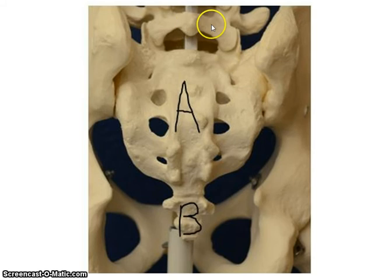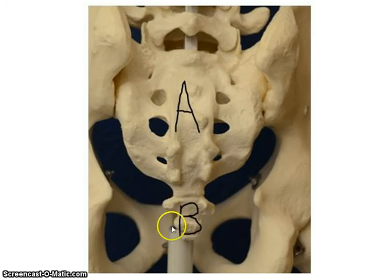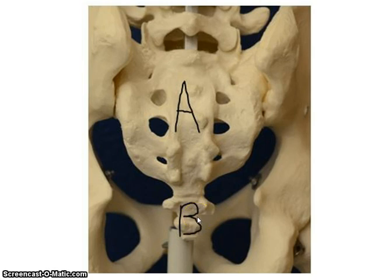Coming down from the fifth lumbar vertebra, you can see the facet joints between the articular processes. Below that is the sacrum, which is fused vertebrae, and then the coccyx at the very bottom. That reviews the vertebral column structures you need to know — take the practice test and fill out the worksheets.